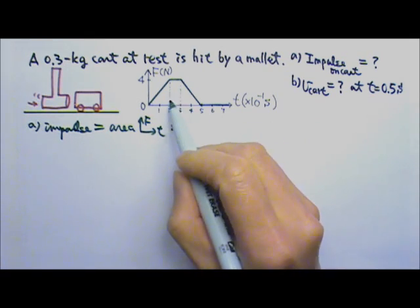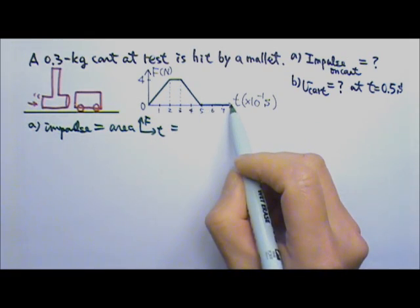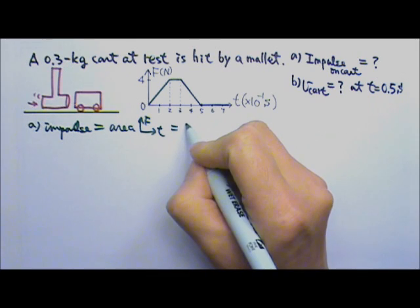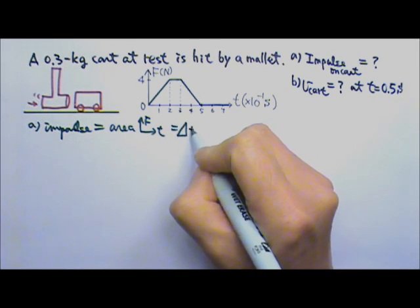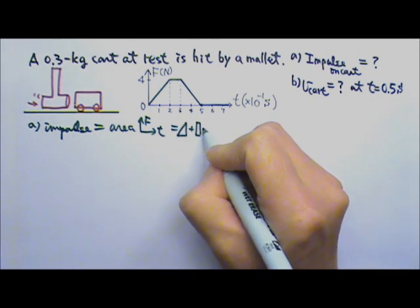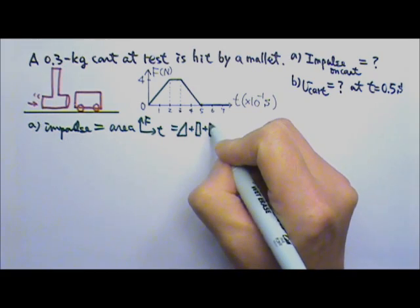So it will be the area right here. There's no area over there. So it is the area of this triangle plus the rectangle plus the triangle.